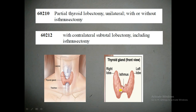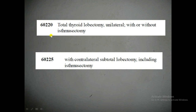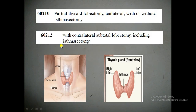Looking at the anatomy of the thyroid gland: this is the right side, this is the left side, and this is the isthmus. The right lobe and left lobe are connected in the middle region by the isthmus. Whenever nodules form in the right lobe, left lobe, or isthmus, the physician performs lobectomy procedures. 'Ectomy' means removal — lobectomy is removal of a lobe, and isthmectomy is removal of the isthmus. The CPT codes covered are 60210, 60212, 60220, and 60225.